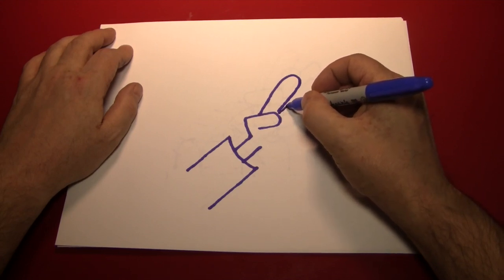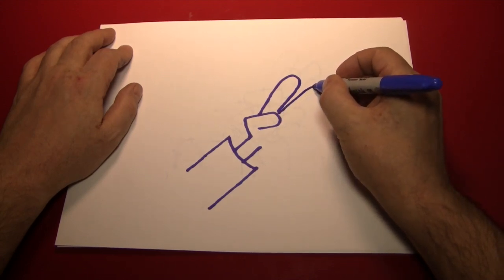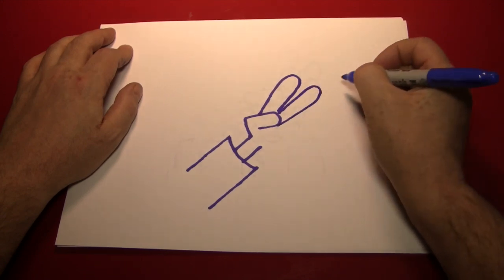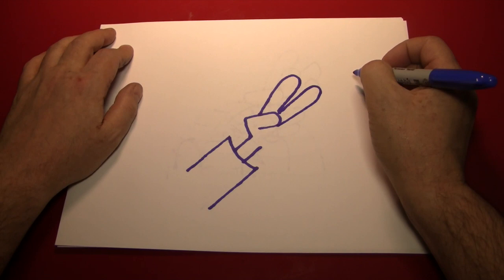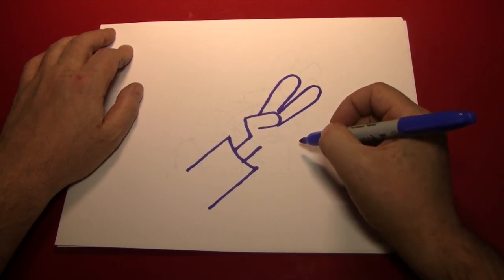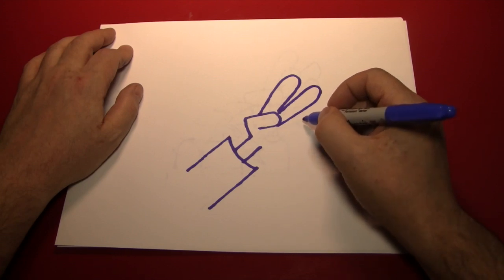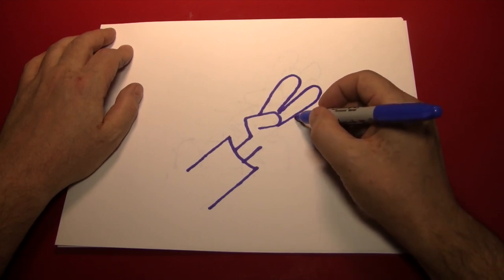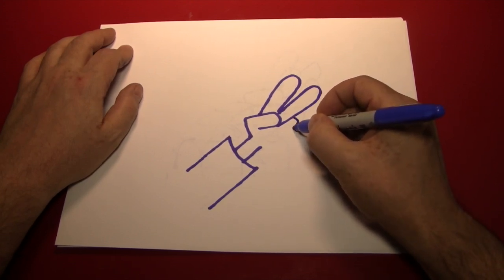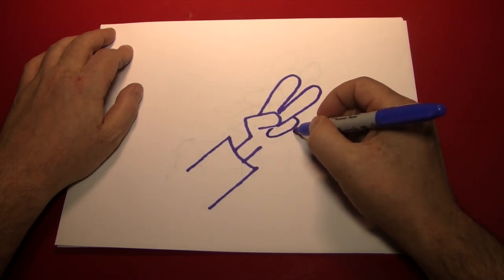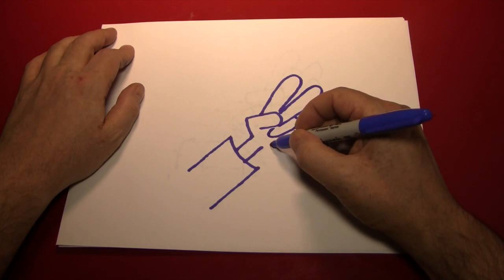Then make the middle finger, which is just a little bit longer than the index finger like that. Next we just have the ring finger and the pinky, and they're very easy to put in at this point. Because it's just one curvy line like that, and another smaller one just below it.